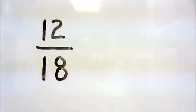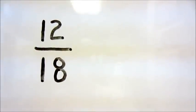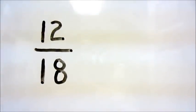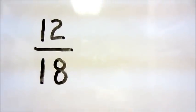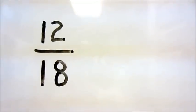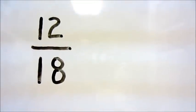When we simplify a fraction such as 12/18, we're making it smaller or reducing it. We have to find the greatest common factor, which is the biggest number that can be divisible by both 12 and 18, and divide by that number.